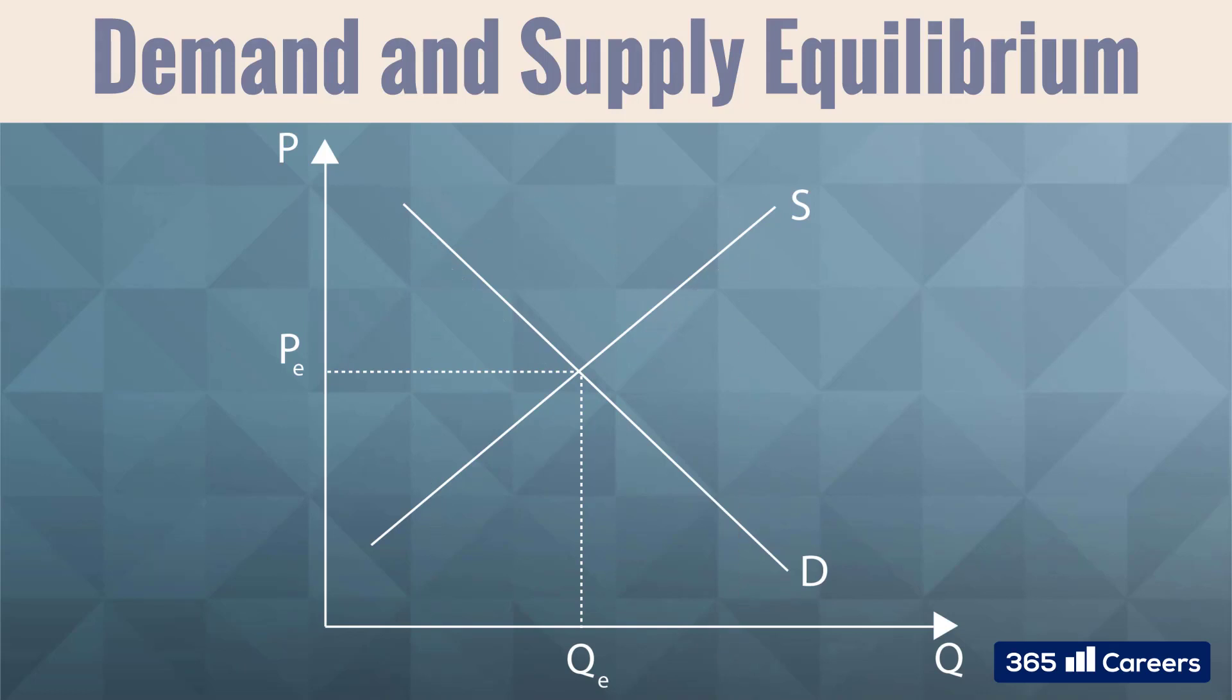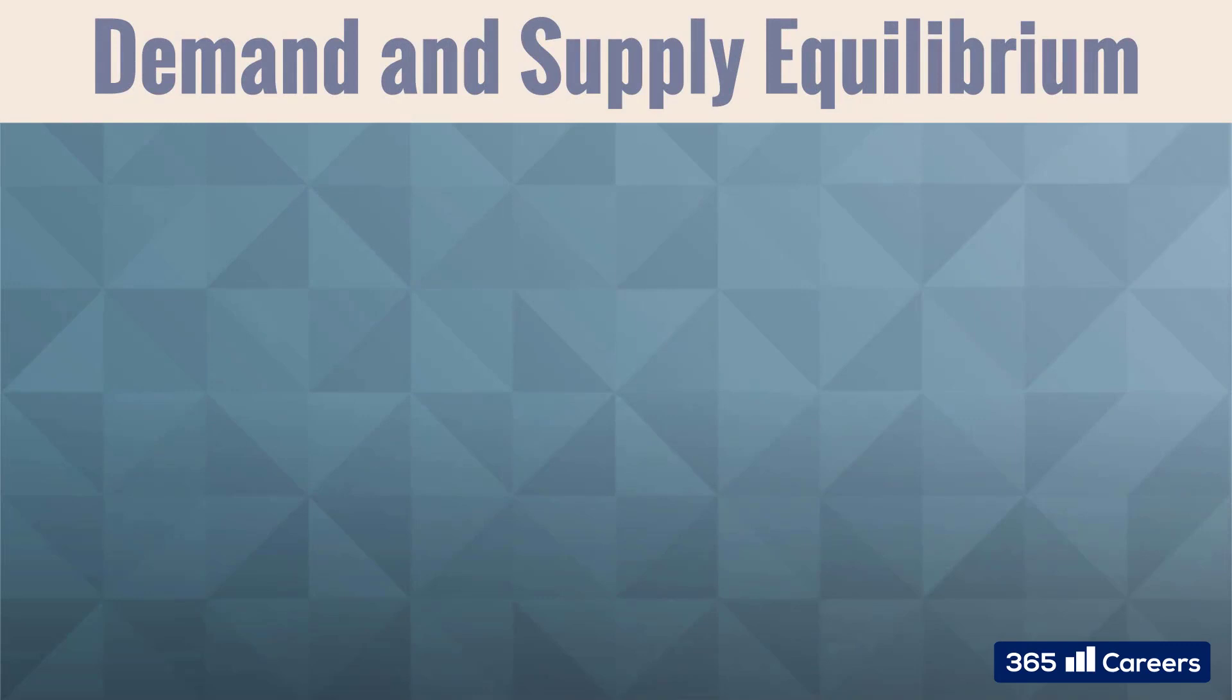Markets are theoretically operating at this point, as it equalizes the benefits for buyers and sellers. But how do we numerically find equilibrium levels? Let's illustrate this quickly through an example.